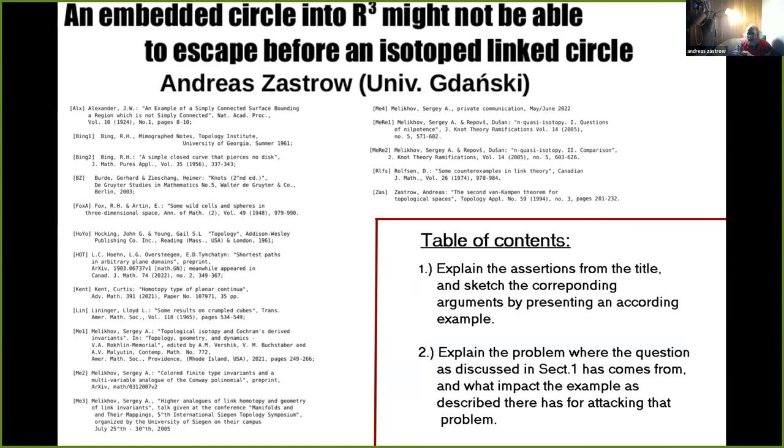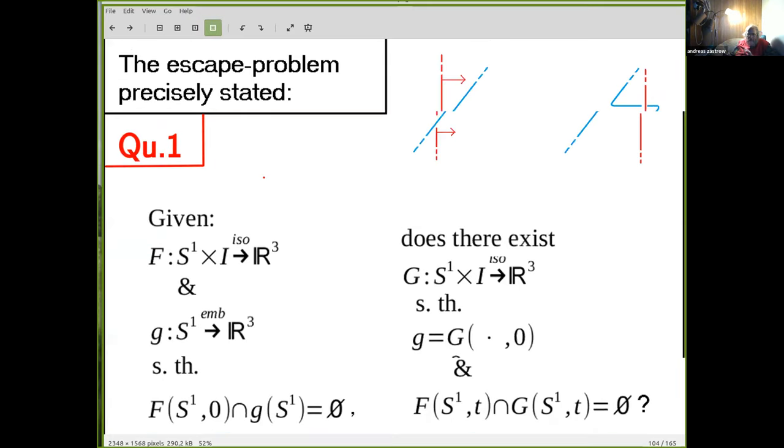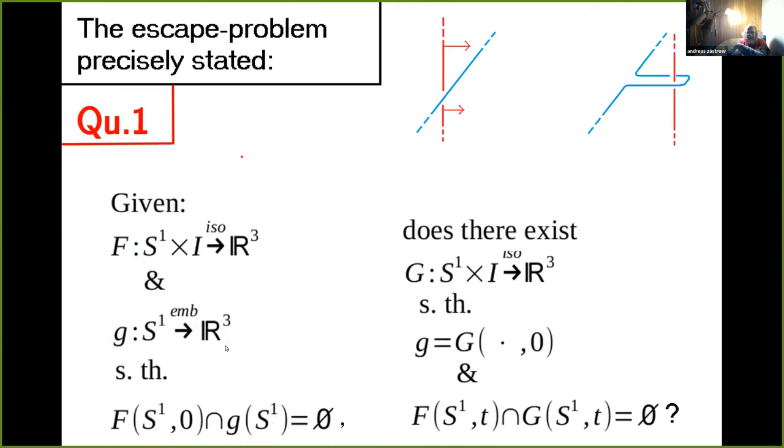Time to start the mathematical part and explain what it actually means when I say that something is escaping before an isotoped link. The question that I want to discuss in the first half of this talk is a precise isotopy extension theory, which means if you are given an isotopy of circles in the plane.